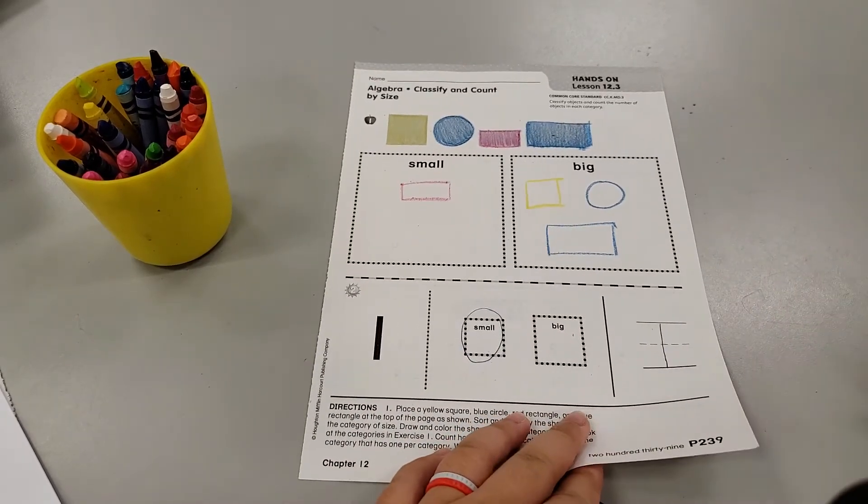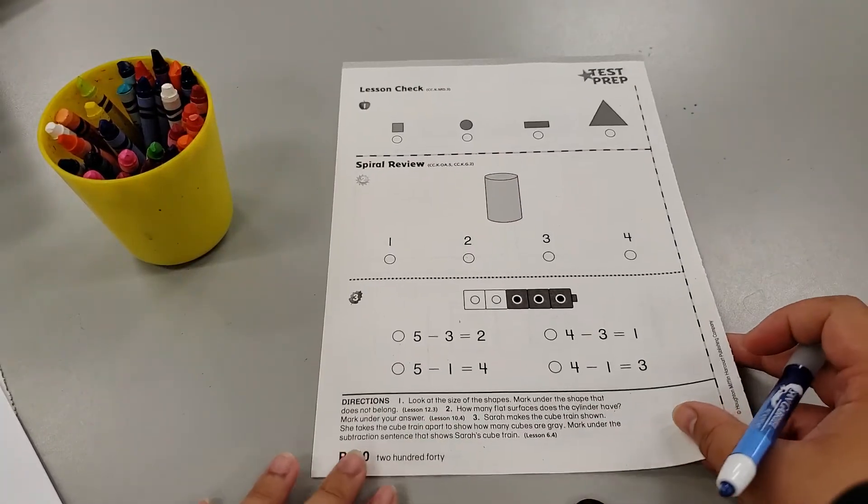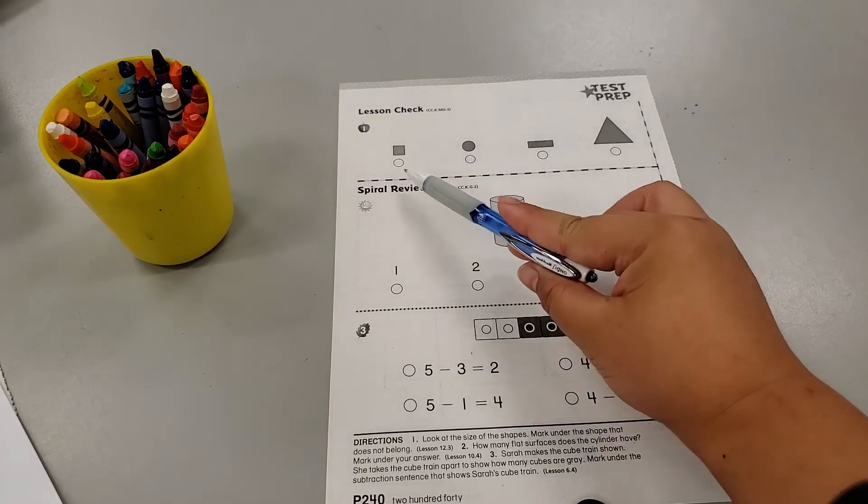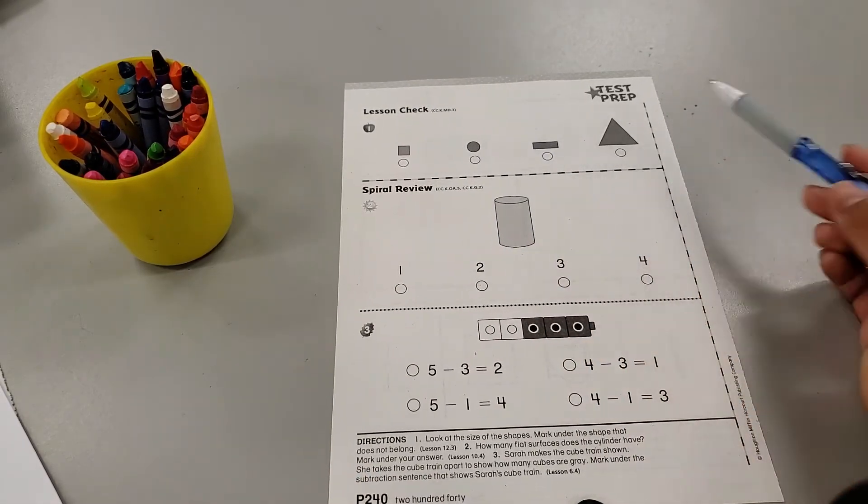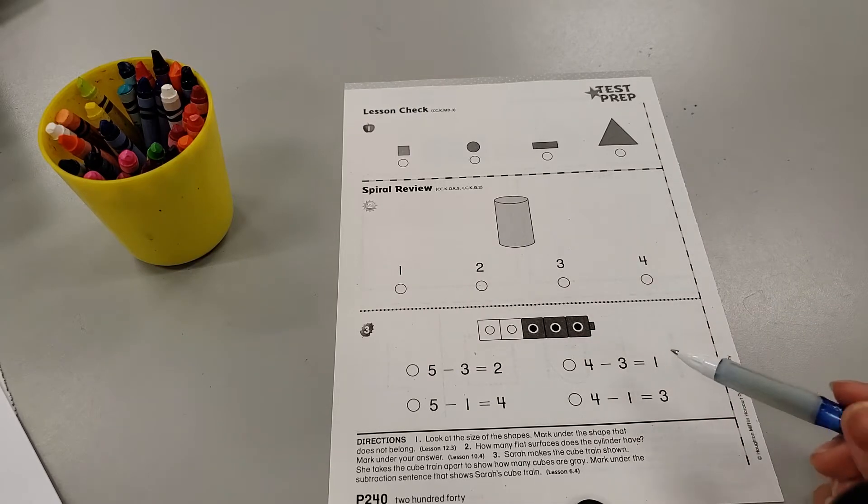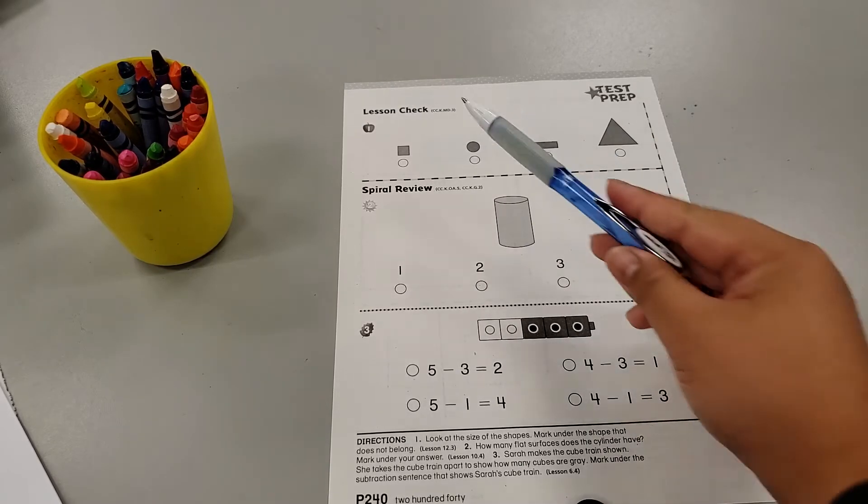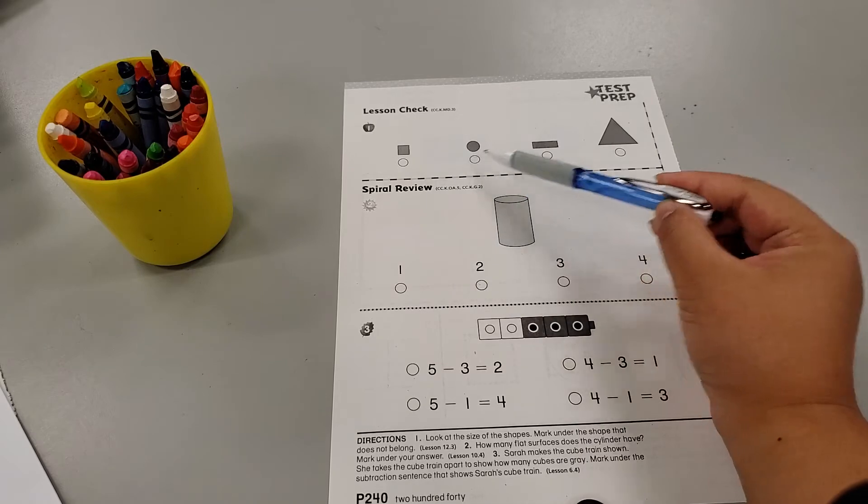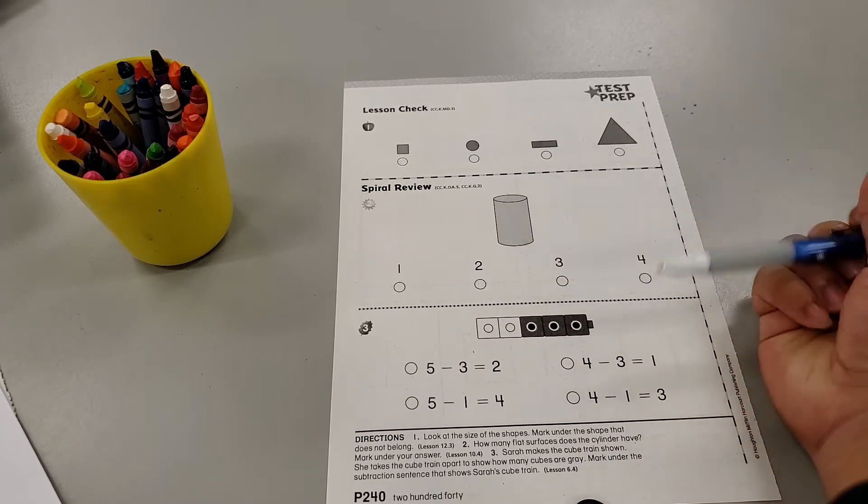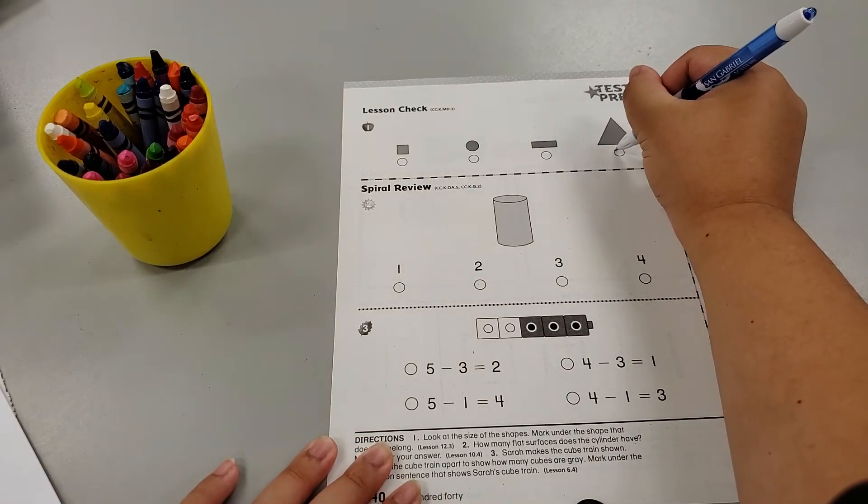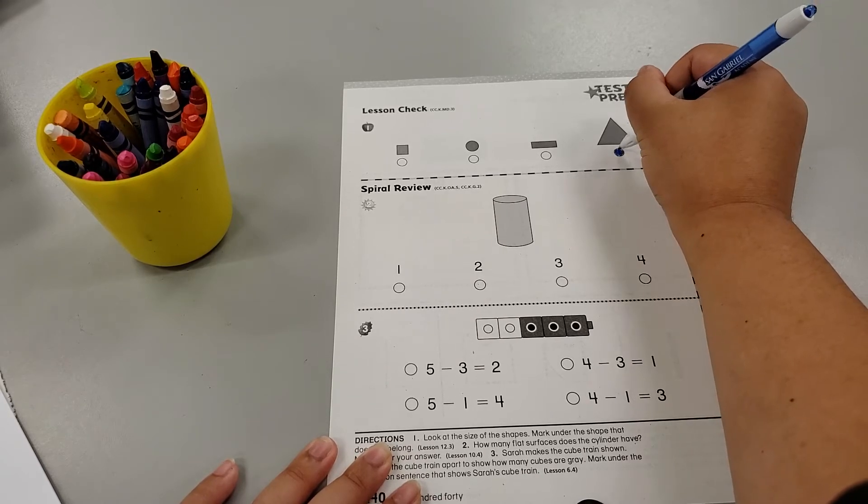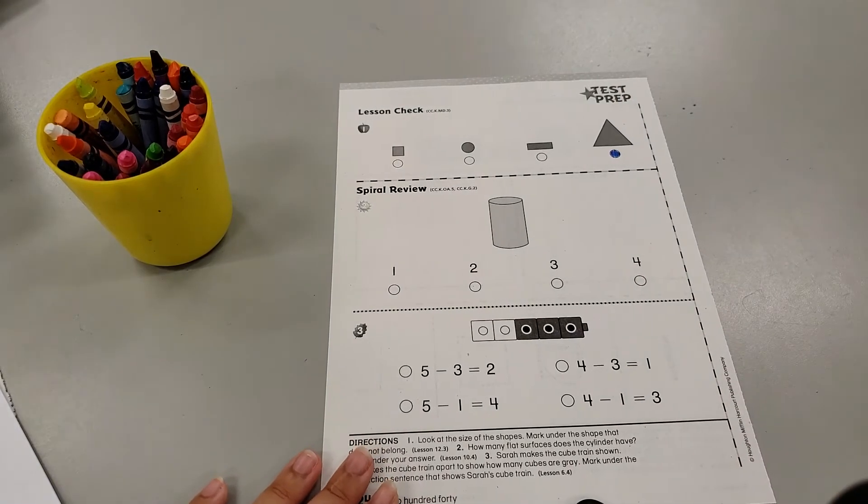And that's it for that first page. When you flip it over, oh my. You have four shapes here. Which shape do you think does not belong? We have a small, small, small, large shape or big shape. That one sticks out definitely. So we will bubble in the circle.